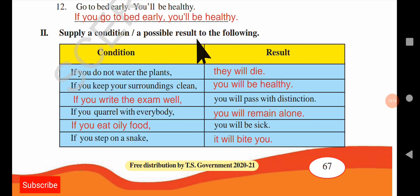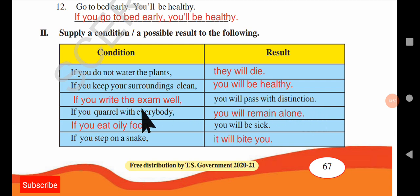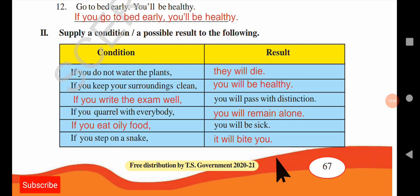Next, supply a condition or a possible result to complete the following sentences. 'If you do not water the plants, they will die.' 'If you keep your surroundings clean, you will be healthy.' 'If you write the exam well, you will pass with distinction.' 'If you quarrel with everybody, you will remain alone.' 'If you eat oily food, you will be sick.' 'If you step on a snake, it will bite you.' These are if conditional sentences with conditions and their results.